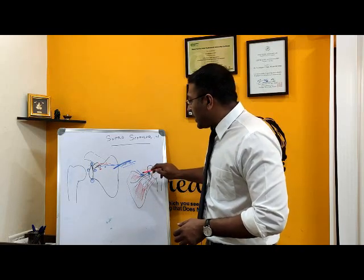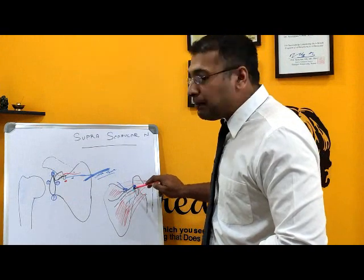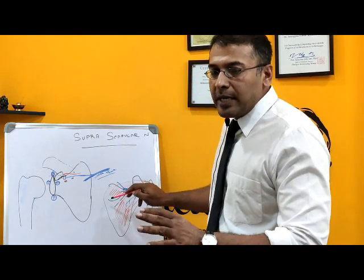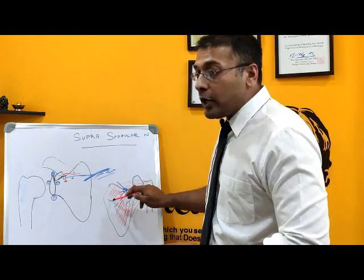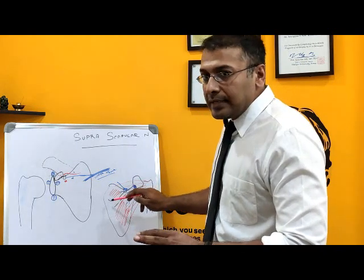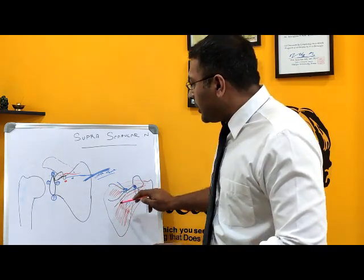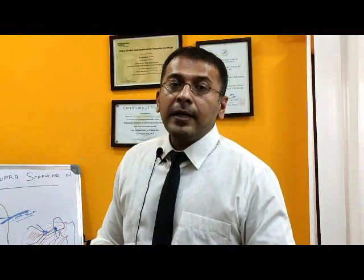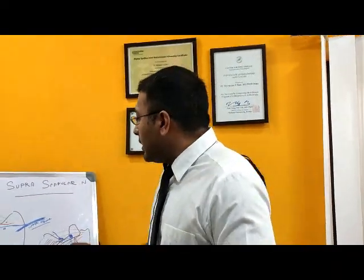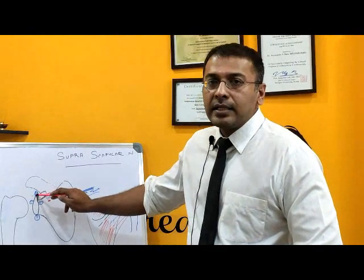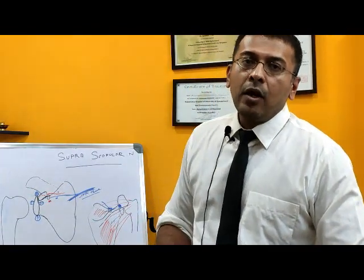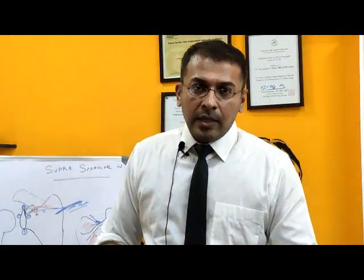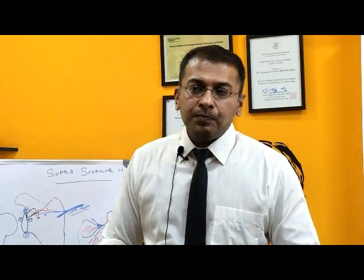If the compression is at the spinoglenoid notch, the supraspinatus muscle is spared because its nerve supply branches off earlier and remains intact. The affection is only of the infraspinatus — weakness and wasting only of the infraspinatus — indicating the problem is at the spinoglenoid notch, most commonly caused by a cyst in that area.